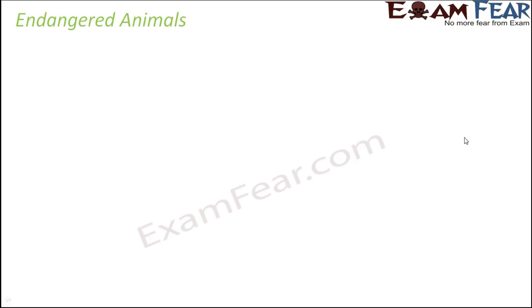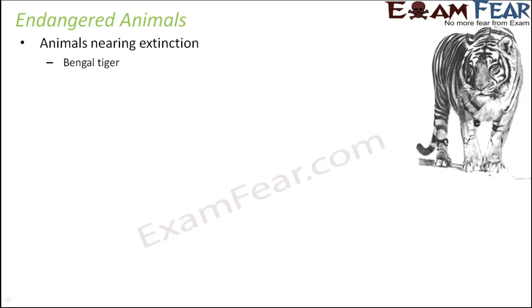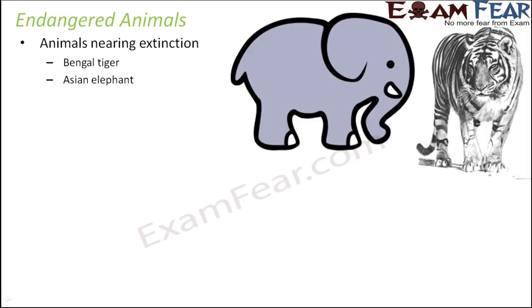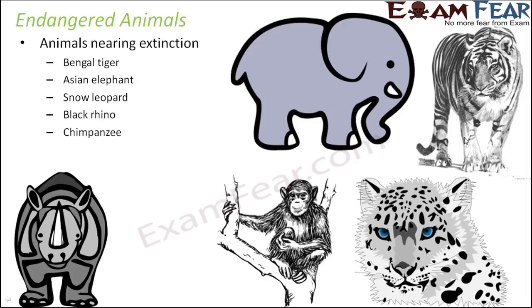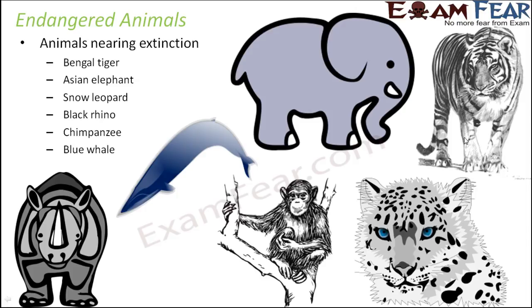When we talk about extinction, all those animals nearing extinction — that is, those which face the threat of extinction — are called endangered animals. For example, the Bengal tiger, of which just a handful exist now; the Asian elephant, snow leopard, black rhino, chimpanzee, and blue whale are all examples of endangered animals whose population is gradually decreasing and which are nearing extinction.